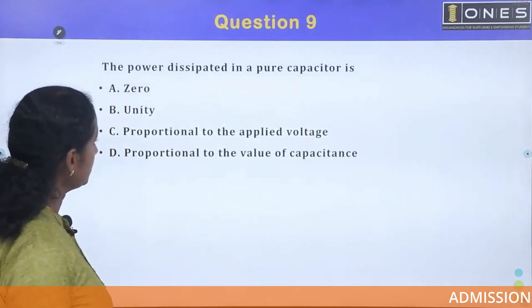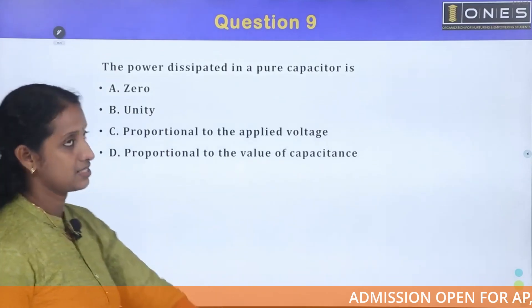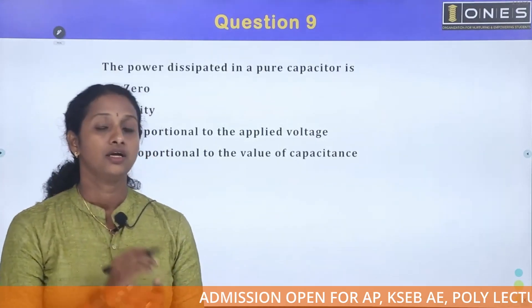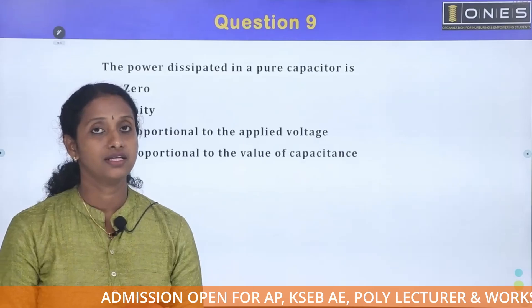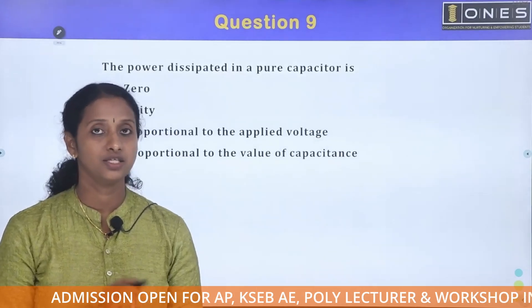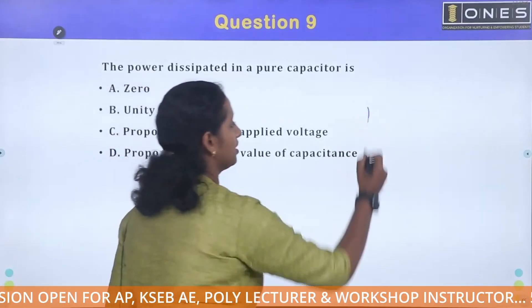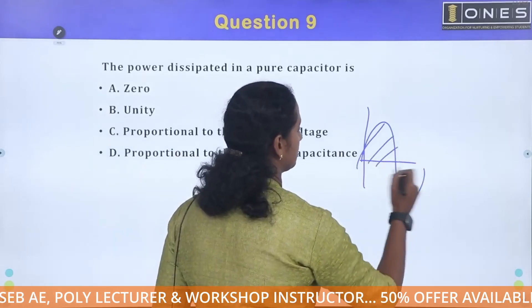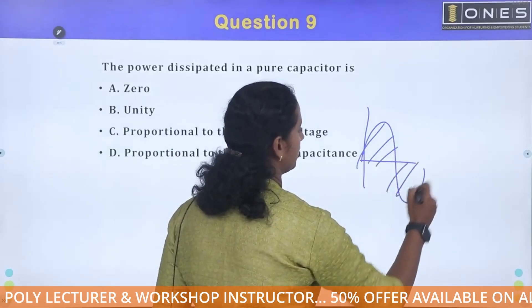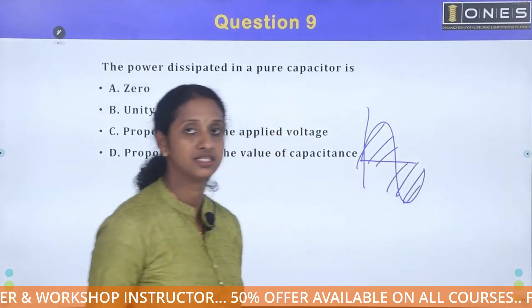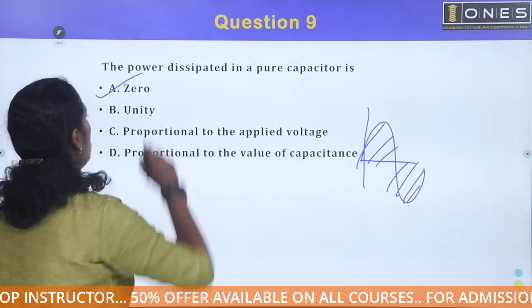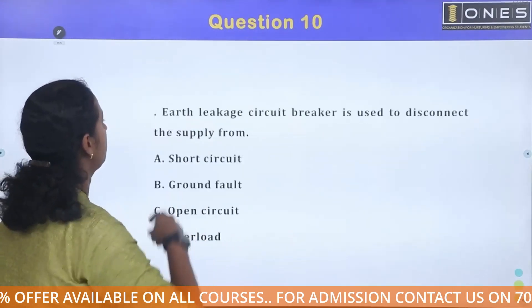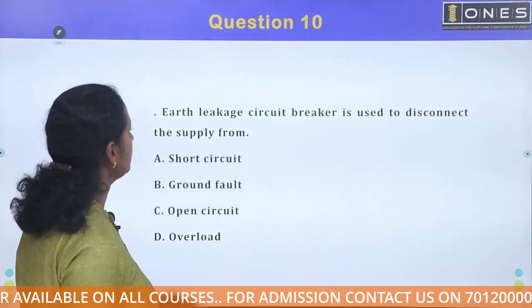The power dissipated in a pure capacitor. For a pure capacitor or pure inductor, the total average power is zero. So it is equal to zero. Option A is the correct answer.